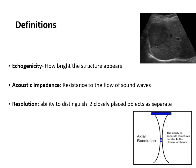Let's understand some definitions commonly used in ultrasound. Echogenicity is how bright an area of interest appears compared to the surrounding structure. For example, looking inside the liver, a rounded hypoechoic area compared to the surrounding structure can be described as hypoechoic, isoechoic, or anechoic.